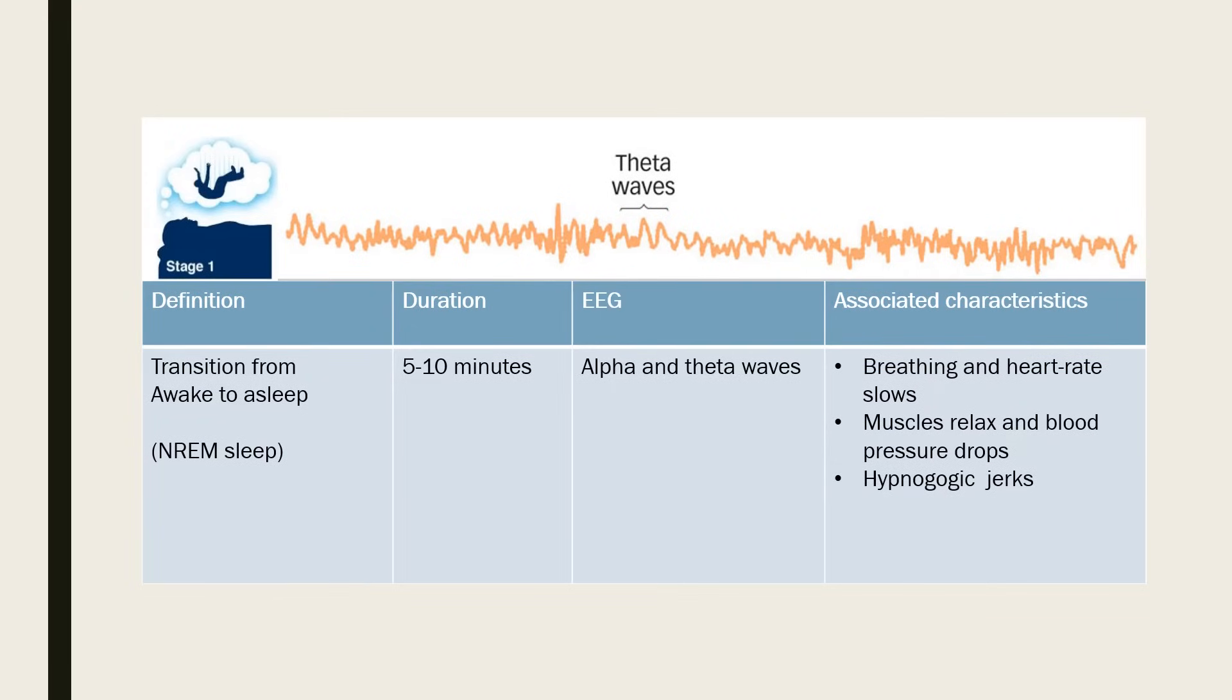Stage 1 sleep is the transition from wakefulness to sleep which typically lasts between 5 and 10 minutes. It is a light sleep where you drift in and out of sleep and can be easily awakened. Indeed if awakened in this stage a person will claim they were never actually asleep. Theta waves appear on the EEG and the eyes move slowly and muscle activity slows. During this stage many people experience sudden muscle contractions preceded by a sensation of falling. These are known as hypnagogic jerks. Breathing also slows down and heartbeat becomes regular in this stage.